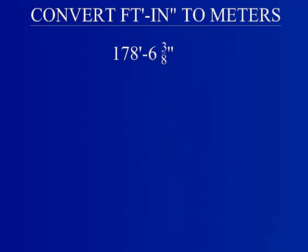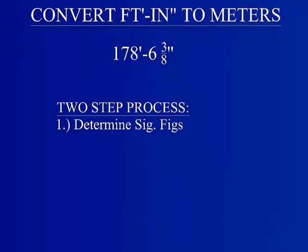Because composite units are not presented with typical significant figures, for example, this distance is given in feet and inches but also includes a fraction of an inch, the first step involves determining how many significant figures, or sig figs, should be retained after the conversion.